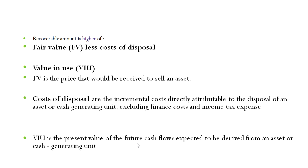Value in use is the present value of the future cash flows expected to be derived from an asset or cash generating unit. It is the value derived if the asset is used by the organization. For example, cash flows over a period of years — year one may be X amount, year two Y amount, year three Z amount. Since there is a time factor, these must be discounted using an appropriate rate to bring them to present value. This is your value in use of the asset or cash generating unit.